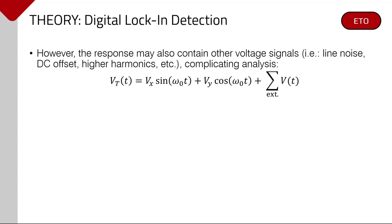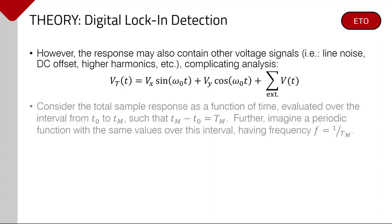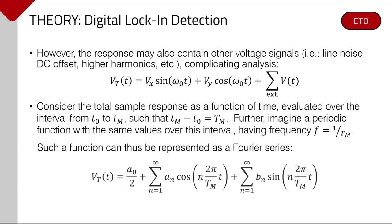Our next step is to consider our voltage response over some finite interval from T0 to Tm. From there, we imagine a function which takes the same values as our voltage response, but is also periodic, having frequency 1 over Tm. We can represent this imagined function as a Fourier series by virtue of its periodicity. To reiterate, this function extends infinitely in positive and negative time, repeating itself over and over. For the particular interval spanning T0 to Tm, its values perfectly coincide with the voltage response we've measured, which includes the sample response, but also any number of intruding voltage signals as well. At first glance, this might not seem helpful. We still don't know the Fourier coefficients a sub n and b sub n, but there is a utility to this form which will soon become apparent.